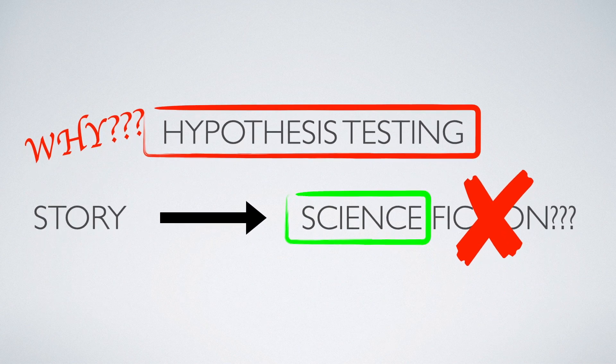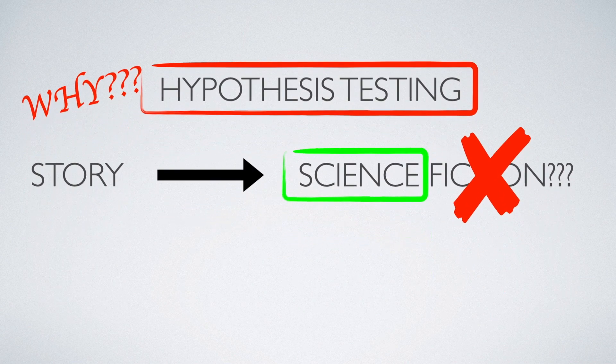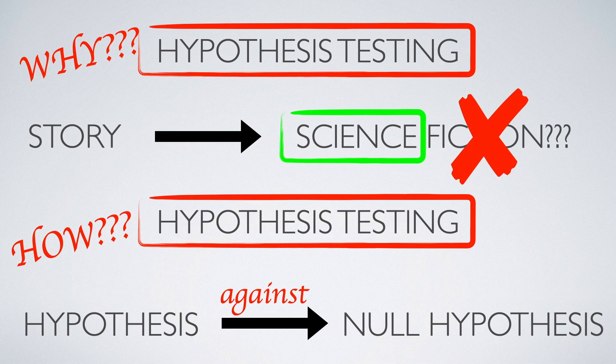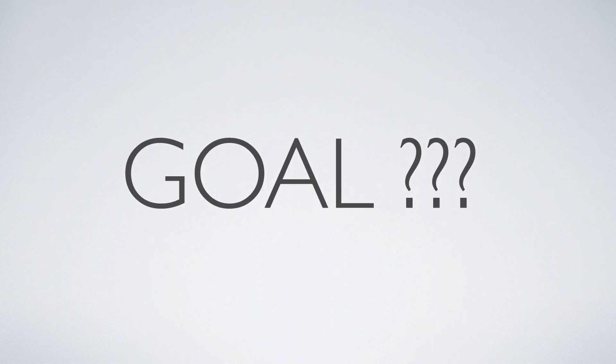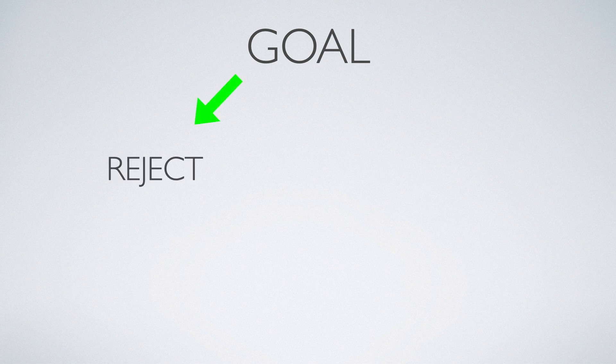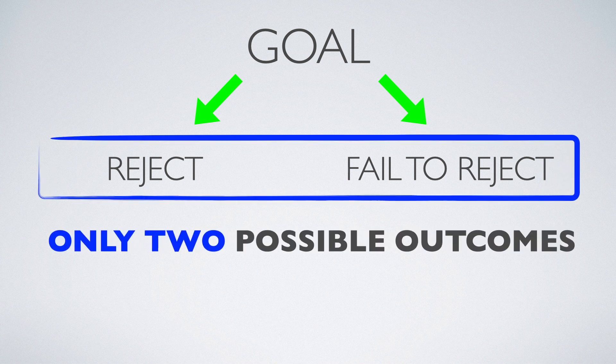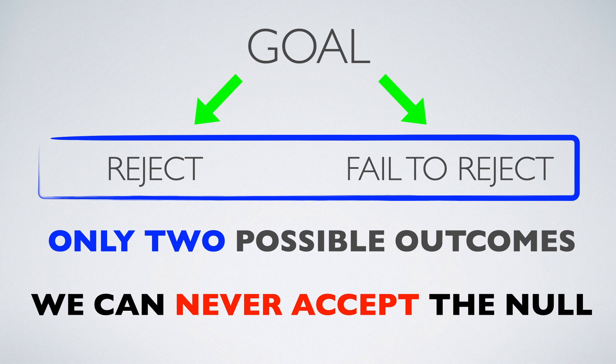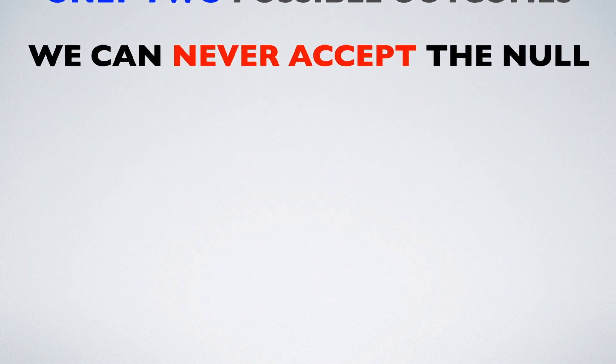Okay, we just learned about what hypotheses are, but how do we test them? And what's the point of testing anyway? Well, the only goal of hypothesis testing is to reject or fail to reject the null hypothesis. There are really only these two possible outcomes. We can never accept the null hypothesis. Why?